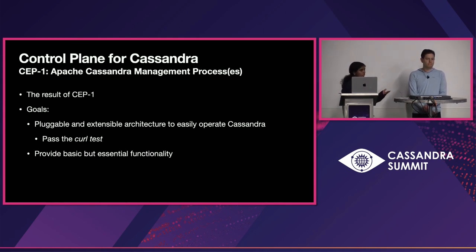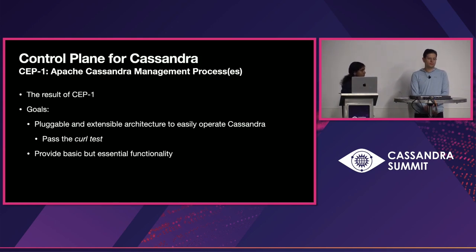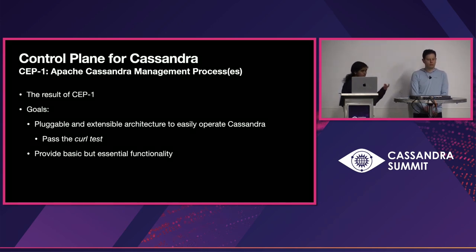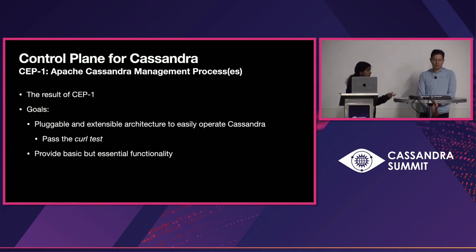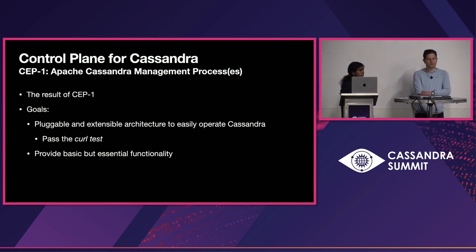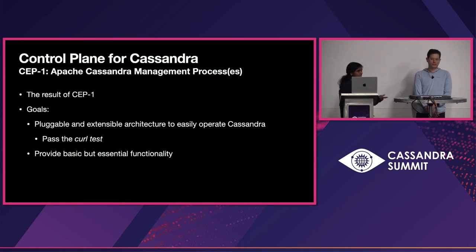Operators do not need to learn any new tool or programming language for operating the database. Sidecar also passes the curl test. We had scale in mind while building Sidecar — it can handle queries at scale. The architecture of Sidecar is pluggable and extensible, and it can be adapted to run and support Cassandra clusters of various Cassandra versions.